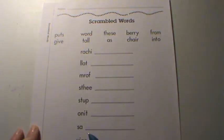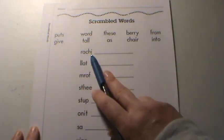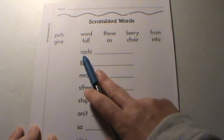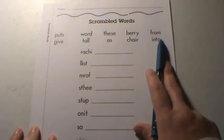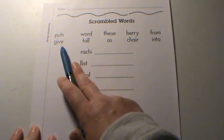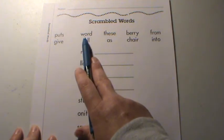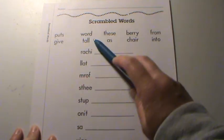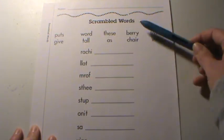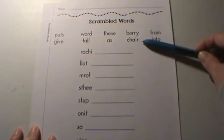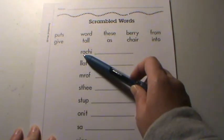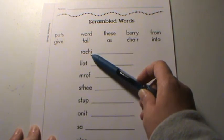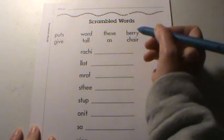So the letters are out of order. Looking at these letters, it has an R, A, C, H, I. I need to find the word that has those same letters. The only words that have an R are: word has an R, Barry has an R, from, and chair. Out of those, only chair also has an A, a C, H, and the I. So that's going to be chair.